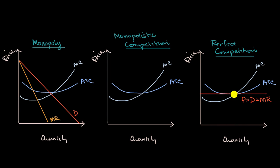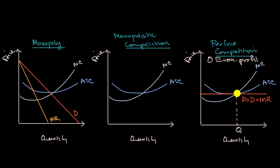Where our marginal revenue curve intersects with our marginal cost curve — which is the rational quantity to produce for a profit-maximizing firm — that's going to be exactly at a level where the price is equal to average total cost, giving you zero economic profit. It's allocatively efficient because we're producing at a quantity where marginal cost equals demand, and also productively efficient because we're producing at the minimum point of the average total cost curve.